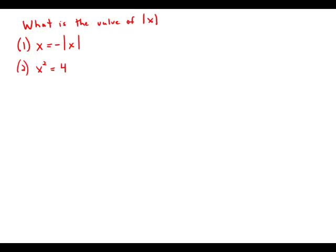The prompt asks: what is the value of the absolute value of x? Statement one says that x equals negative the absolute value of x. The only way that's going to happen is if x is a negative number. For example, the absolute value of negative three equals positive three, so negative of that equals negative three. Statement one tells us that x is negative, but it does not give us the particular value of the absolute value of x, so statement one is insufficient.